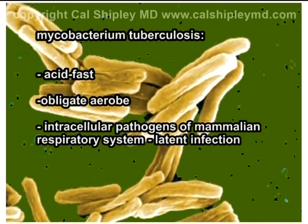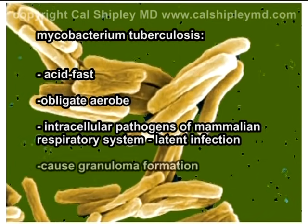Another defining characteristic of tuberculosis infection in humans is the formation of granulomas, and we'll see how this works in just a moment.